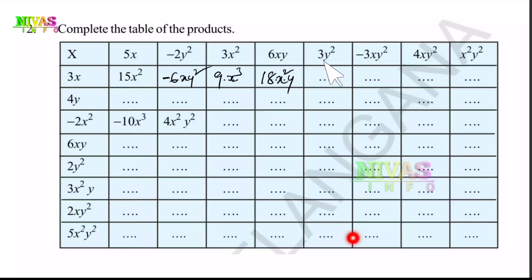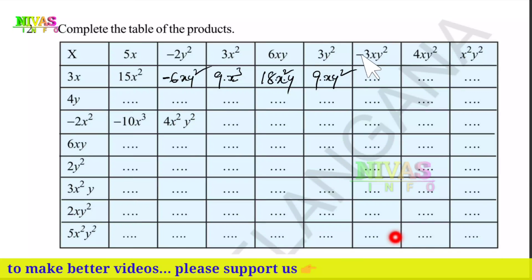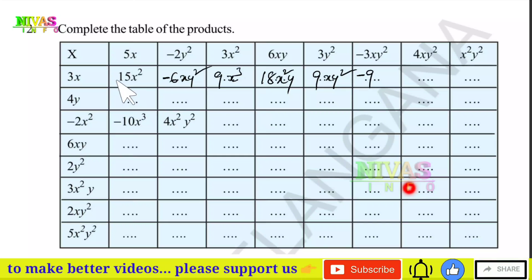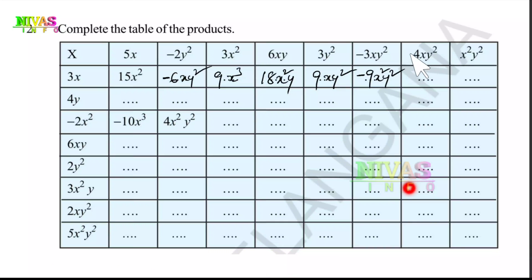Next, 3X into 6XY: 3 into 6 is 18, X into X is X squared, so 18X²Y. Then 3Y squared into 3X: 3 into 3 is 9, X into Y squared gives XY squared. We continue filling in the table until it is complete.